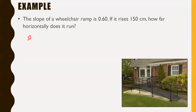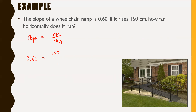Slope equals rise over run. We know our slope is 0.60 and our rise is 150, so: 0.60 = 150 / run. So 150 divided by something equals 0.60. This becomes an algebra question where we have certain numbers and want to figure out the others.